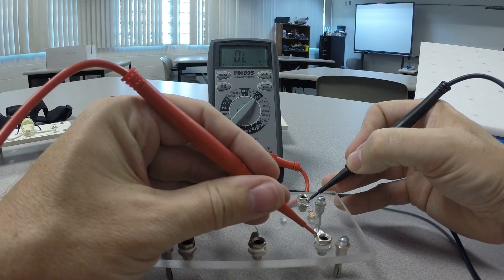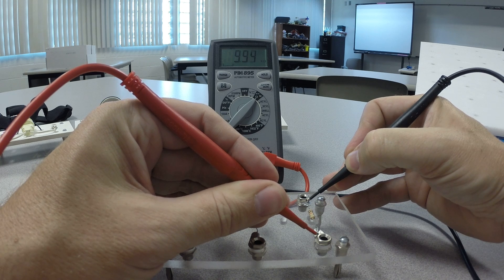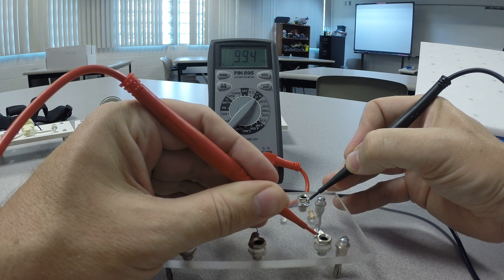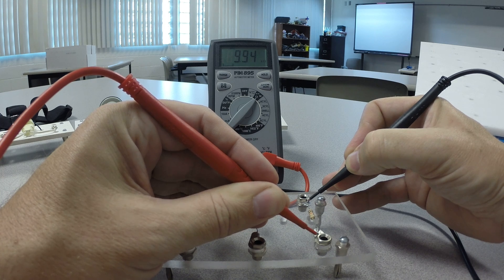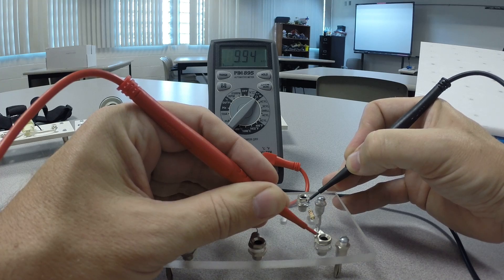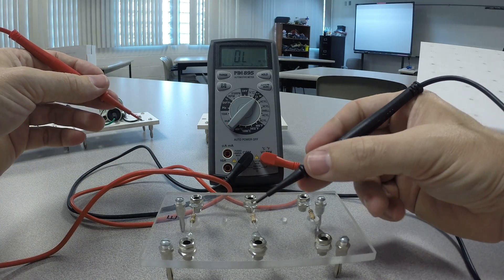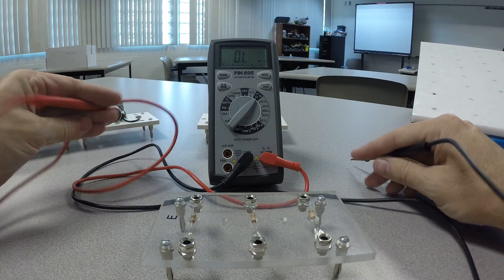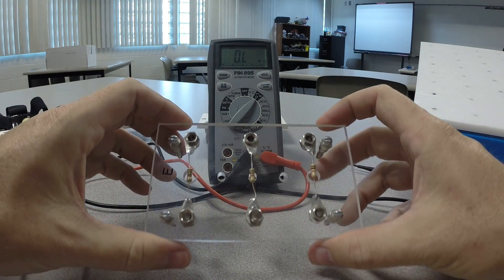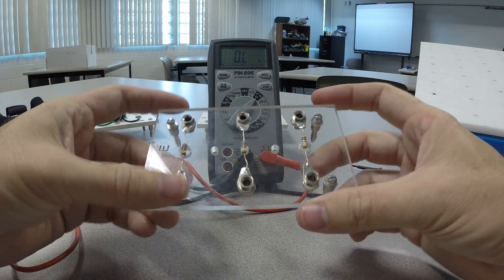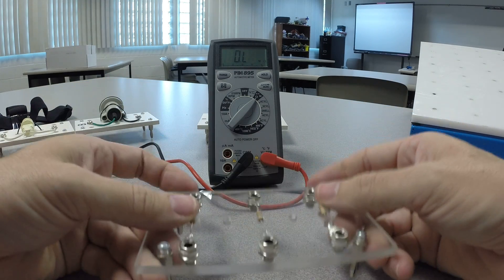We'll go to the last resistor. This says 9.9 kiloohms. So we're just shy of 10,000 ohms in that resistor. And that's good. This is a 10,000 ohm resistor. That's a 1,000 ohm resistor. And this is a 100 ohm resistor. And there's a certain amount of tolerance built into any resistor. So those resistors are all good.